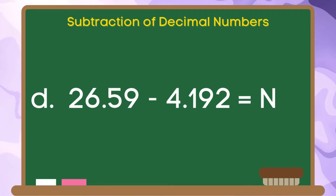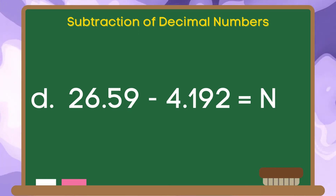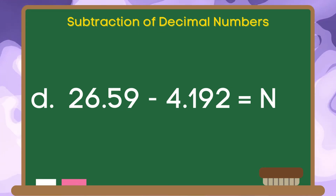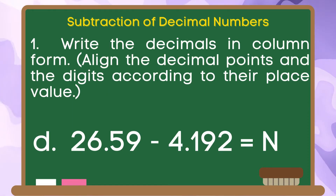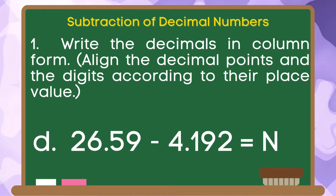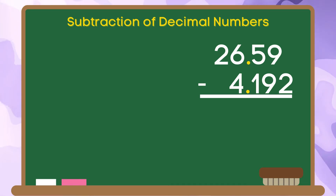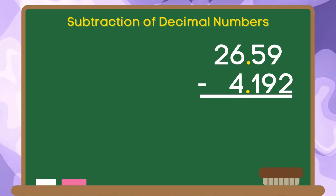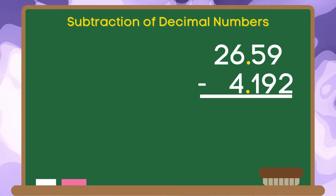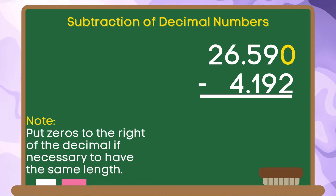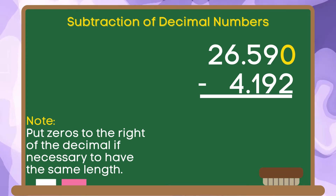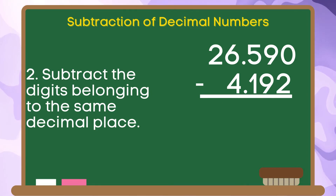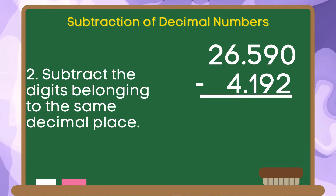And for the last example, let's subtract 4 and 192 thousandths from 26 and 59 hundredths. Step 1: write the decimals in column form. Don't forget to align the decimal points and the digits according to their place value. For this example, we are going to write 0 on the thousandths place value so that the decimal numbers have the same length. Step 2: subtract the digits belonging to the same decimal place.